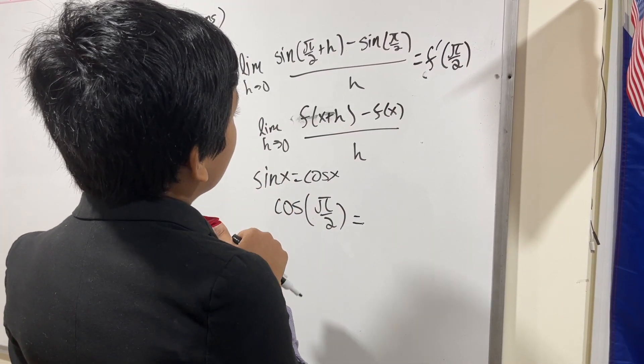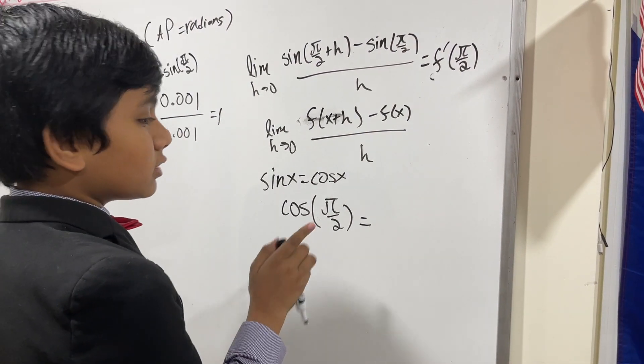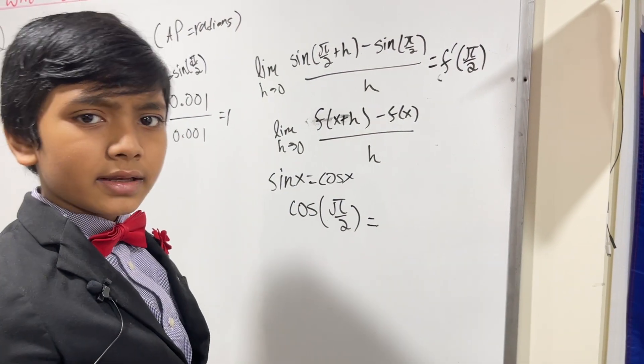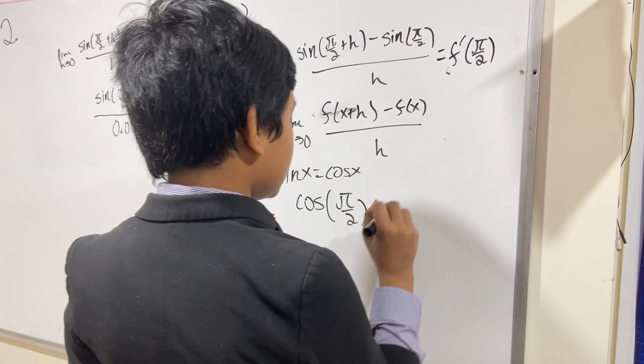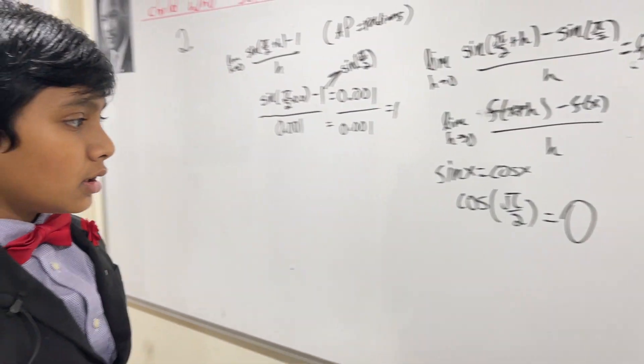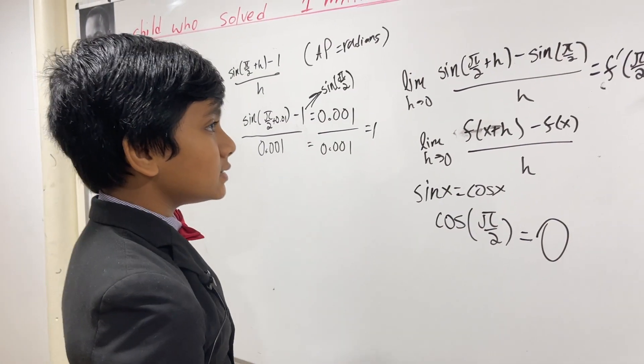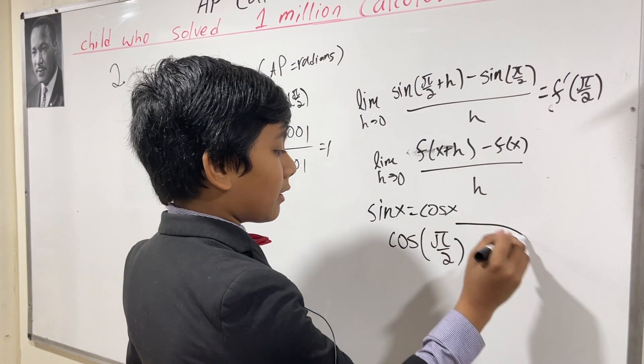Oh wait, no. Pi is 180, so this is cosine 90. What is cosine 90? It's zero. So that means that this is our answer.